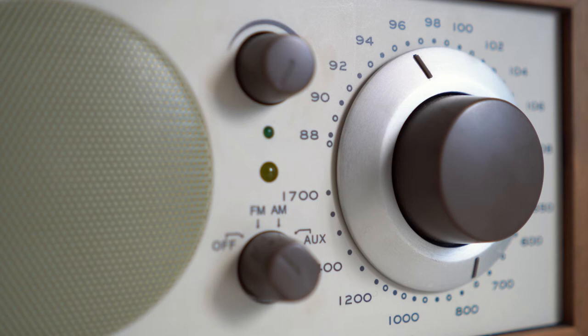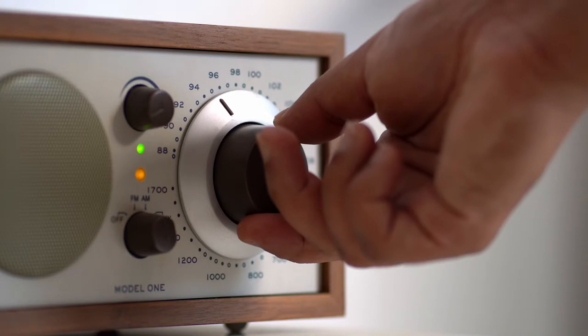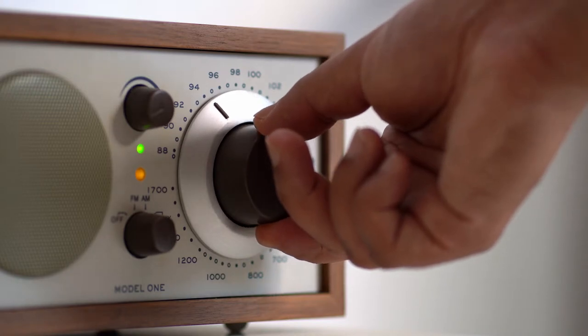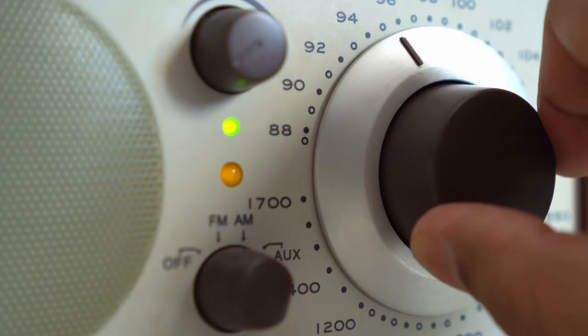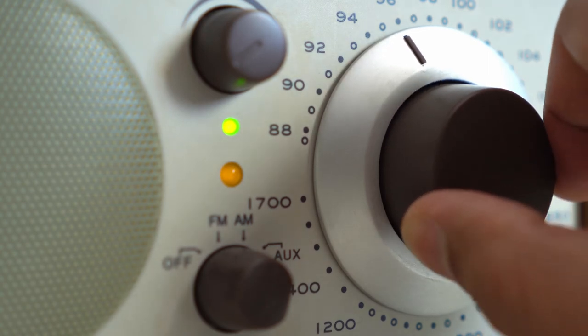The tuning knob has 5 to 1 gearing down ratio for precision fine-tuning of frequencies. This, along with an LED that glows brightly once a signal is locked, makes finding and locking onto your favorite frequencies efficient and easy.